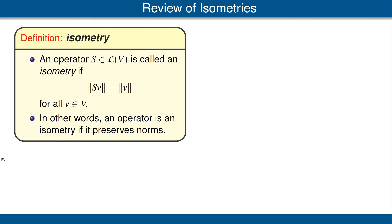Recall from the previous video that we are letting V denote a finite dimensional inner product space. Let's review the definition of isometry that we saw in a much earlier video. An operator S on our inner product space V is called an isometry if the norm of S of V is equal to the norm of V for every vector V. In other words, an operator is an isometry if it preserves norms.